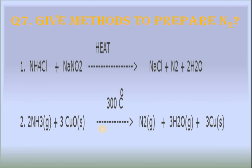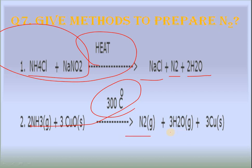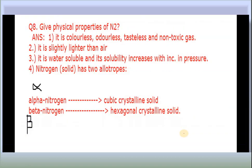The next question: give methods of preparation of N₂. There are two methods. First: ammonium chloride reacts with NaNO₂ on heating to give NaCl, N₂, and 2H₂O. Second: ammonia reacts with copper oxide at 300°C to give N₂ gas, water vapors, and copper solid. These are two methods of preparation of N₂.